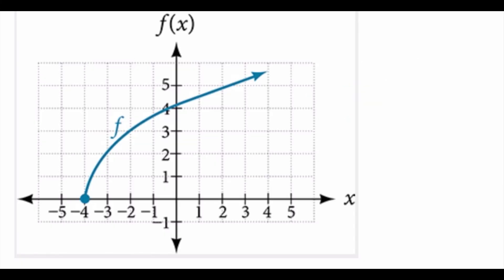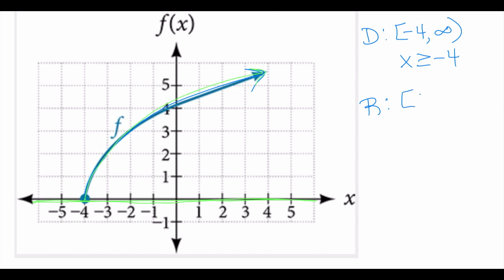In this problem, we're starting at negative 4, so the domain is negative 4, and because of the arrow pointing toward positive infinity, I want all x-values greater than or equal to negative 4. The range is pretty simple: the lowest y-value is 0 and it goes toward positive infinity. So the range is from 0 to positive infinity — all y-values greater than or equal to 0.